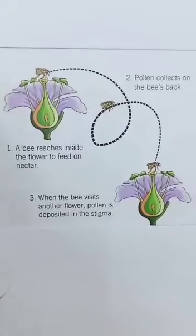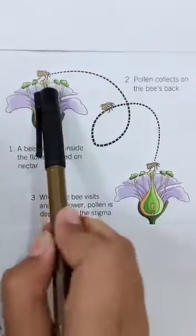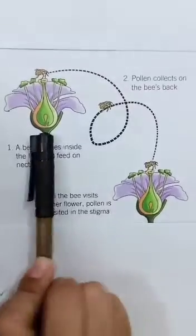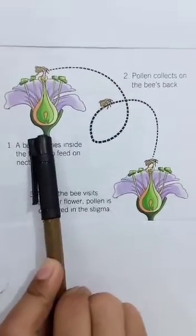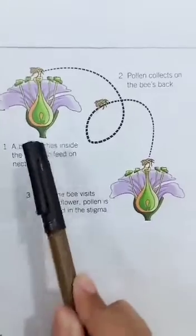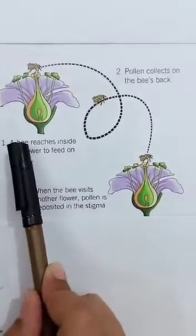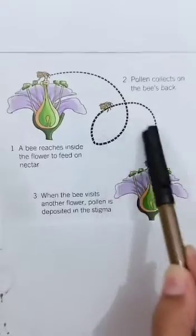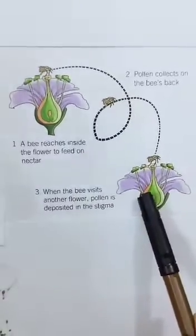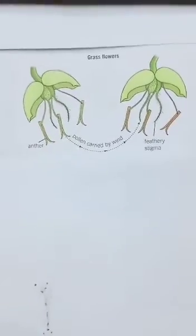Now, pollination by insects. Insects such as bees visit flowers to collect nectar and pollen for their food. While the bees are collecting food, their hairy bodies become covered in pollen grains. As the bee visits other flowers, pollen is transported from the anther of one flower to the stigma of another.